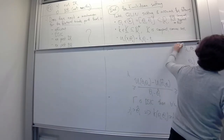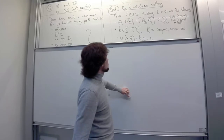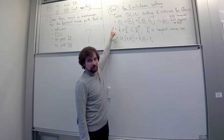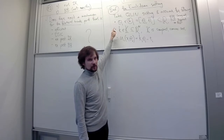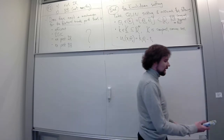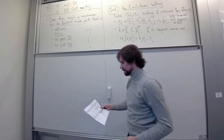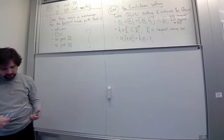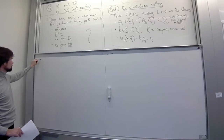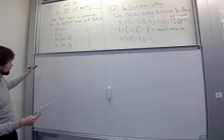Now we use monotonicity to get to revenue equivalence. A mathematical result that may seem familiar depending on how much math you've seen: if the allocation k is monotone in theta_i, it is also continuous almost everywhere in theta_i — that is, continuous for all but a measure-zero set of points theta_i.